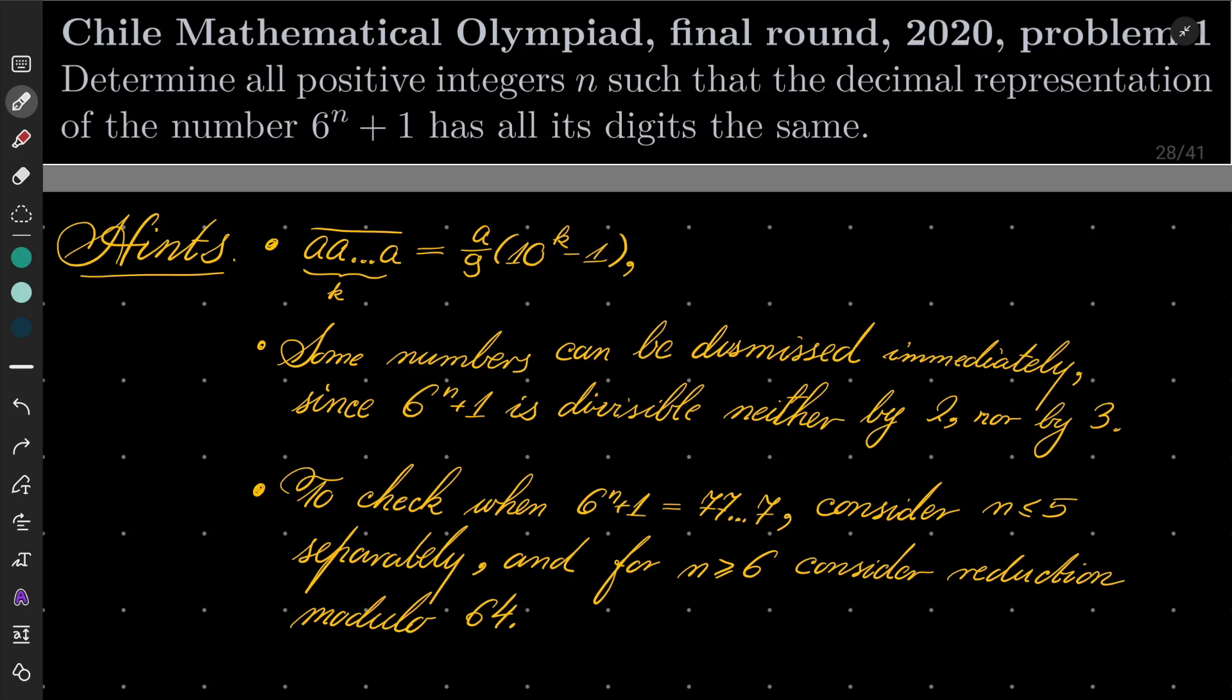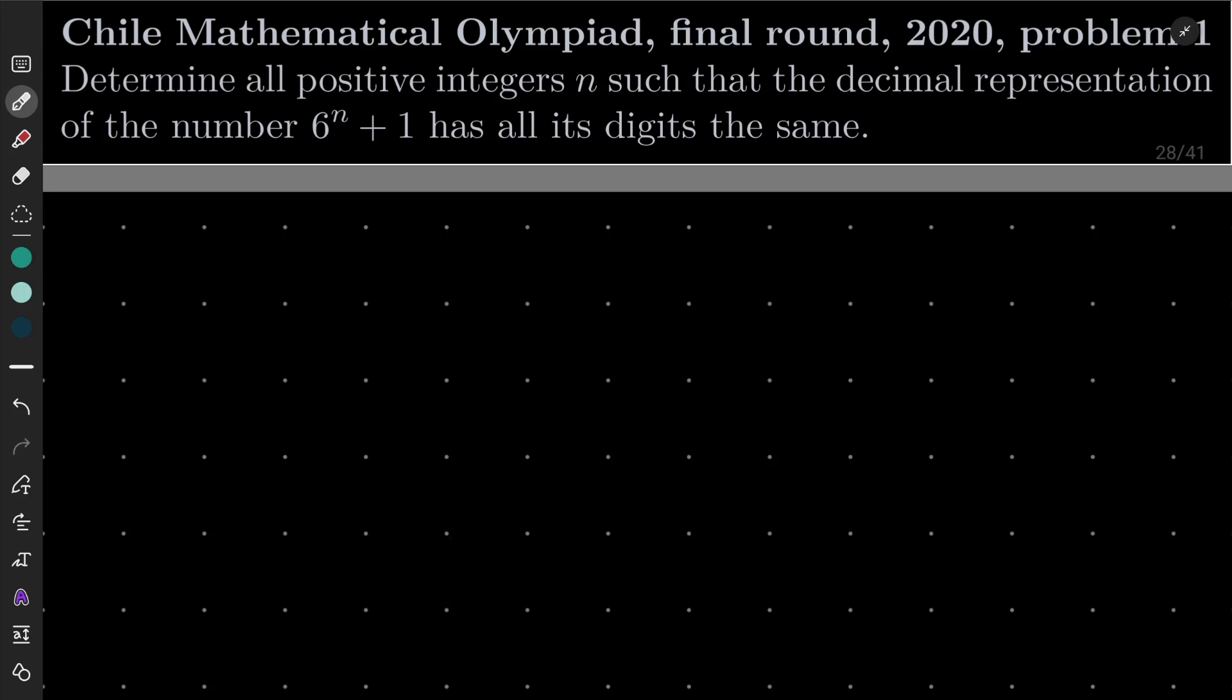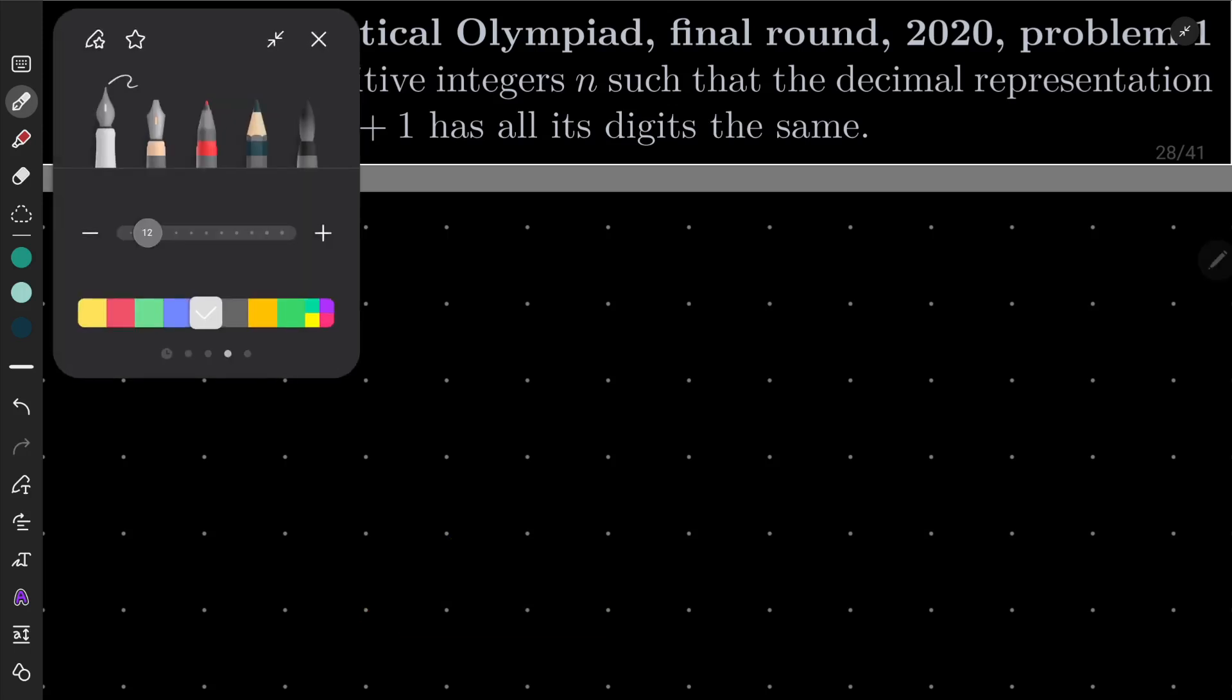and for n greater than or equal to 6, consider reduction modulo 64. So give this problem a try and I will see you in just a minute. Okay, so as I suggested, let's notice